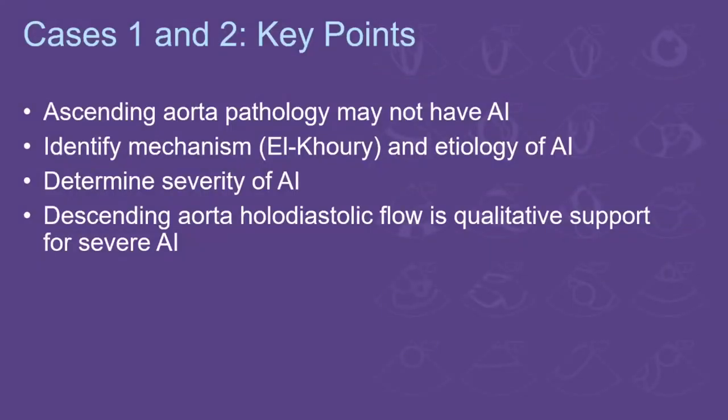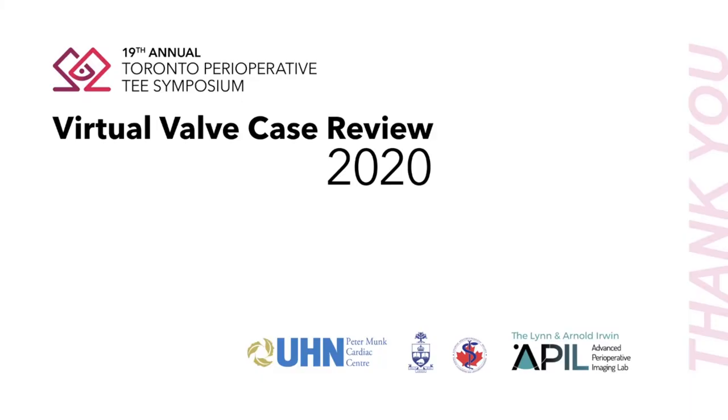To wrap up key points from Cases 1 and 2: ascending aorta pathology may or may not have associated AI. It's important to identify the mechanism — type 1, 2, or 3 — and the etiology of the AI. Severity can be determined using the described parameters. If you see holodiastolic flow reversal in the descending aorta, it provides qualitative support for severe AI. Thank you very much.